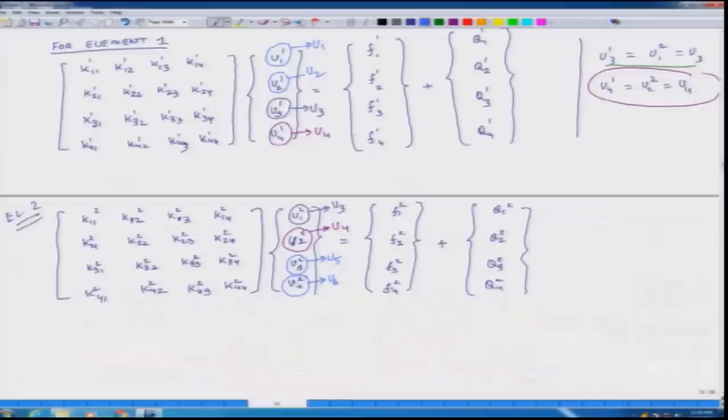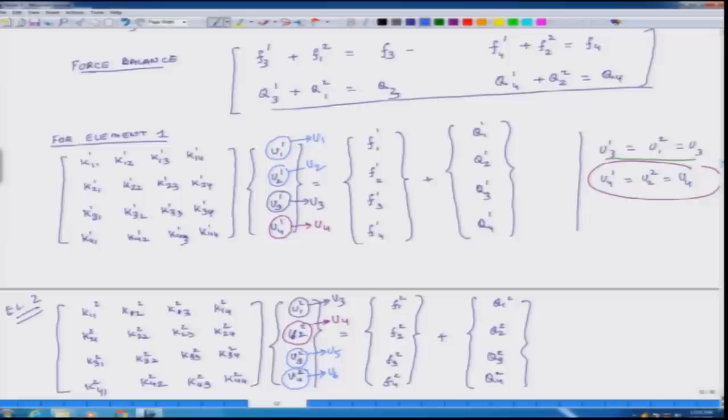So now you have 8 equations, 4 for first element and 4 for second element and I have 6 degrees of freedom. So I have a total of 2 extra equations which I have to eliminate. So for that we use the force balance relation. So we see that f1_3 plus f2_1 equals f3.